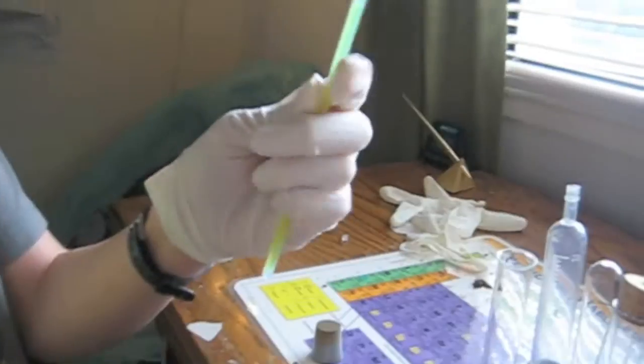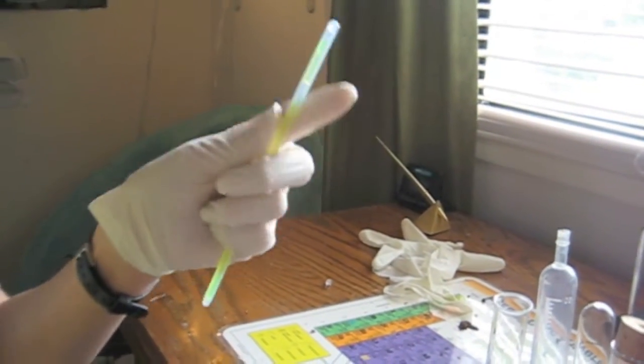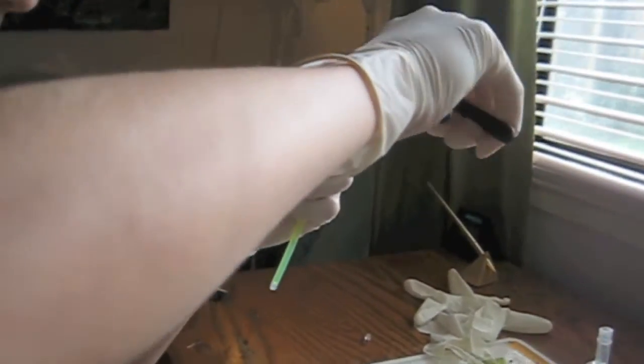So today we are going to find out what's inside a glow stick. The first step is to cut the top off the plastic case with a pair of wire cutters.